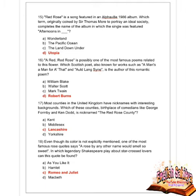Next question: A Red Red Rose is a song featured in the Alpha Rails 1986 album — complete the name of the album in which the single was featured. Options are Wonderland, The Pacific Ocean, The Lands Down Under, and Utopia. Option D is correct — Utopia.